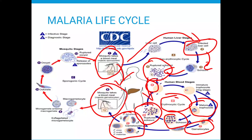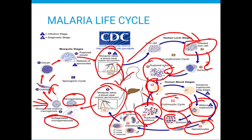At stage eight, as the mosquito takes a blood meal, it ingests the gametocytes. The macro-gametocyte is the female gametocyte and the micro-gametocyte is the male — think of them as the egg and the sperm. At stage nine, the two fuse together, and after fusion there is formation of an oocyst. This occurs in the midgut of the mosquito. The oocyst ripens and eventually bursts, releasing sporozoites.